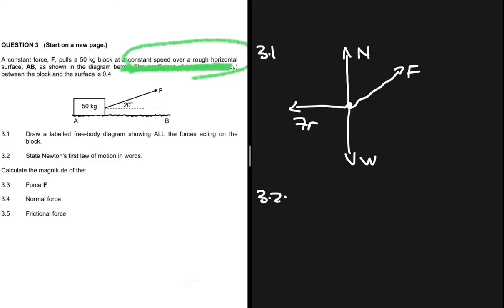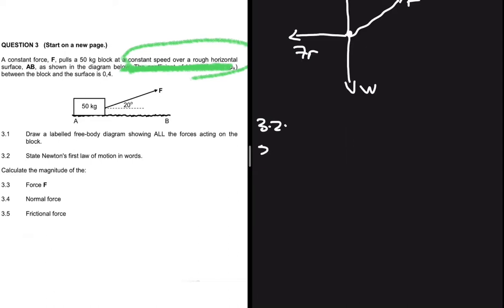Now moving to 3.3, we need to calculate the magnitude of force F. Reading the problem: a constant force F pulls a 50 kg block at a constant speed. Constant speed tells us that the net force is equal to zero — the forces acting on the object are balanced.